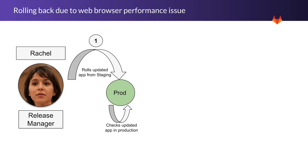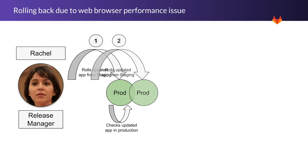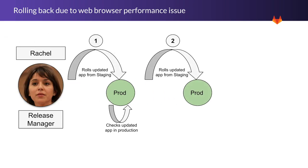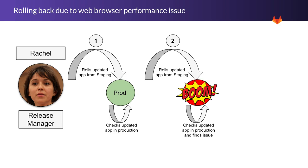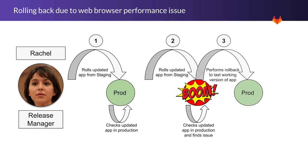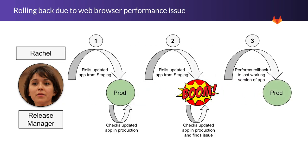Then a second release of the application will take place which she will also roll out to production. She will find a web performance issue with the new release, find out its probable cause, and then proceed to roll back the latest update from production.